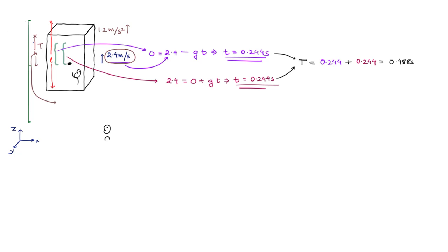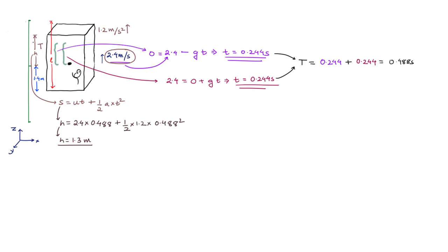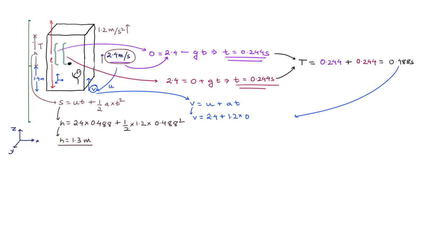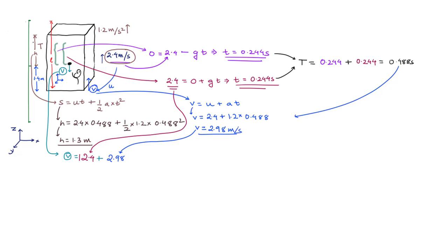We calculate the height the elevator car covered in that 0.488 seconds, starting with an initial velocity of 2.4 m/s upward and acceleration of 1.2 m/s², using s = ut + ½at². We get 1.3 meters, so the remaining distance the bolt must cover in the elevator car's frame is 1.4 meters. Using v = u + at we find the elevator's velocity has increased to 2.98 m/s. The relative velocity of the bolt at that instant is the sum of the bolt's velocity and the elevator's velocity, since both move in opposite directions.